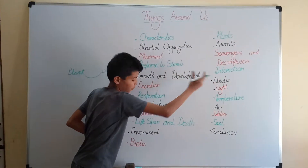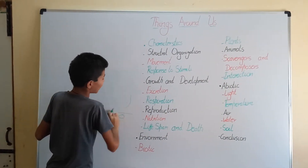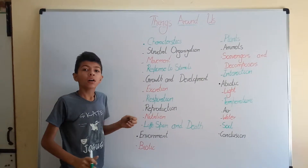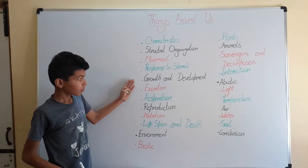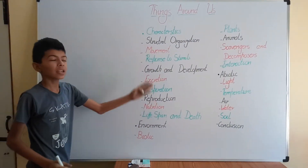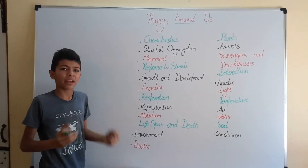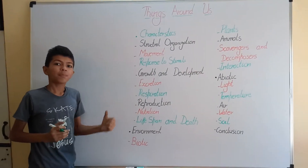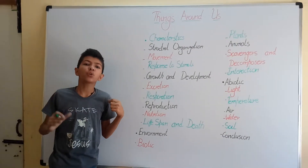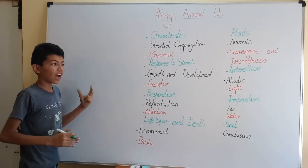Then we have abiotic components. Abiotic components are the non-living things that affect the growth and development of living organisms. The first abiotic factor is light. If there were no light, plants could not produce food and we would not get enough heat to maintain normal body temperature — it would be extremely cold on Earth.